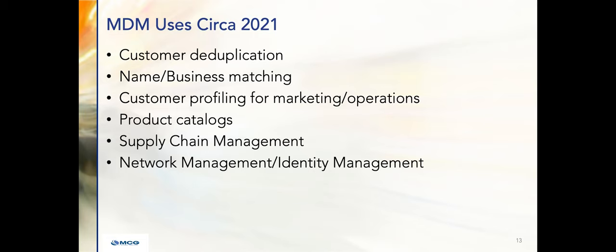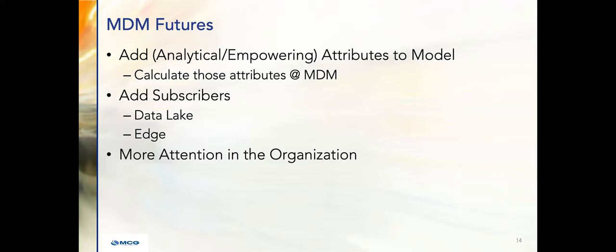Supply chain management is a big one — deliveries, shipments, carriers, transport modes, material sites. Those are excellent subject areas; if they were mastered, supply chain management would be a lot easier and more effective. Network management: applications, services, VMs, data centers, routers, switches, fabrics — if they were managed, your network management would be at another level. In the future, we're going to add analytical empowering attributes to the model, calculate those attributes at MDM, and add subscribers. MDM data does nothing in and of itself — it has to be used with an application.